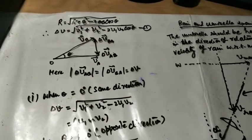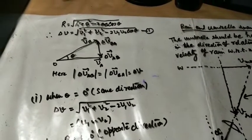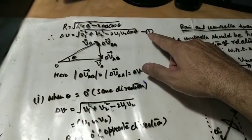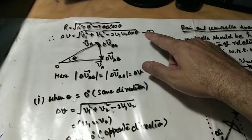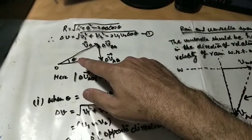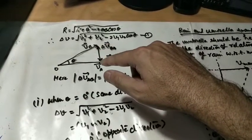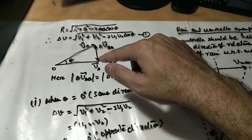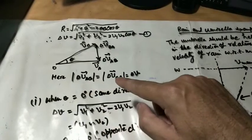Relative velocity of two particles is given by difference of two vectors. v1 and v2 are velocities of two particles and these two particles are moving at angle theta. The line joining heads of two vectors is difference of two velocities. Very clearly, magnitude of two vectors are same.